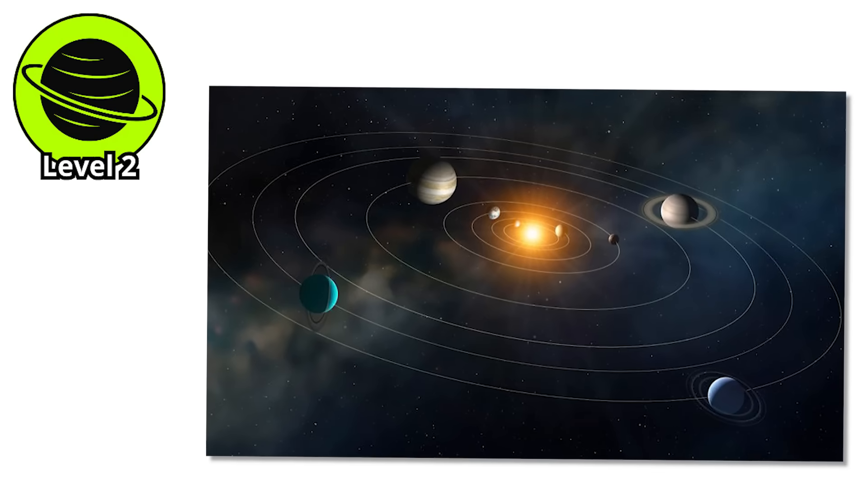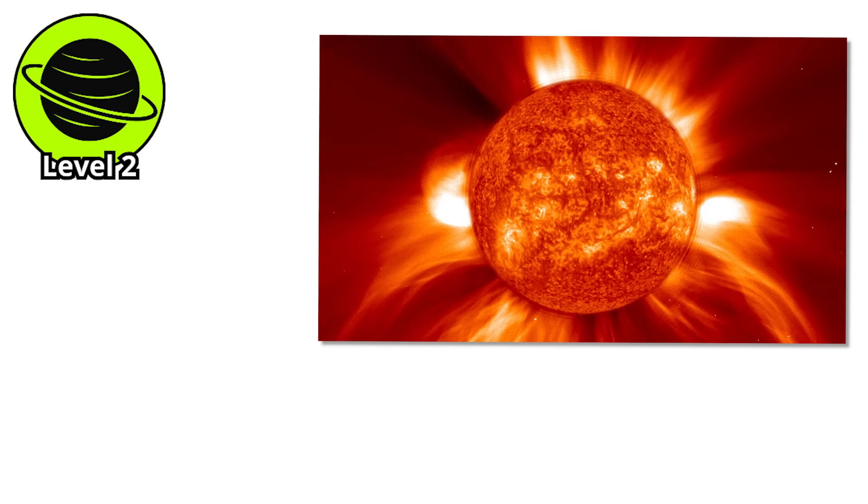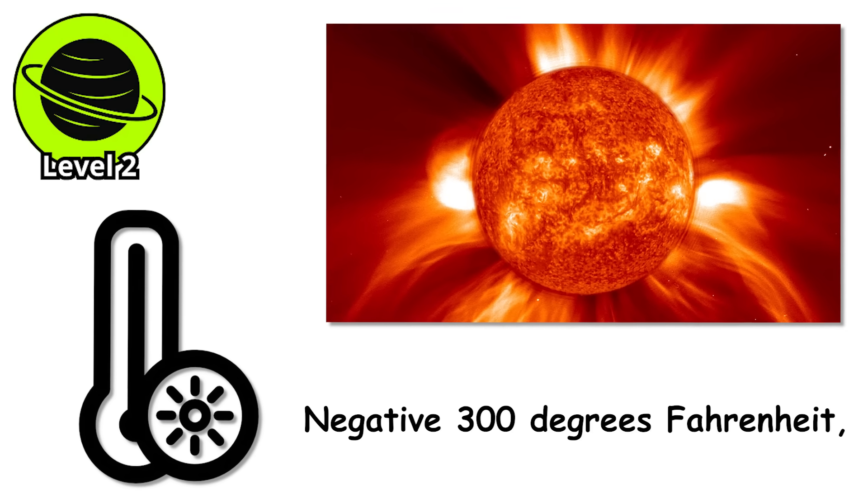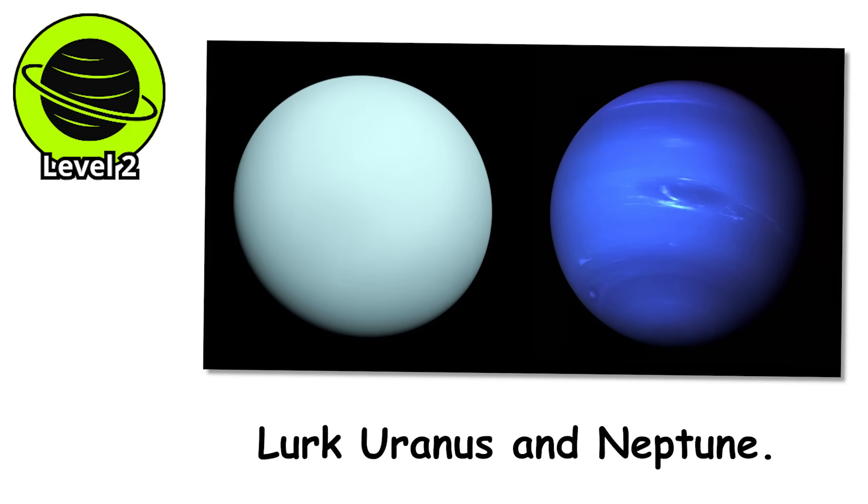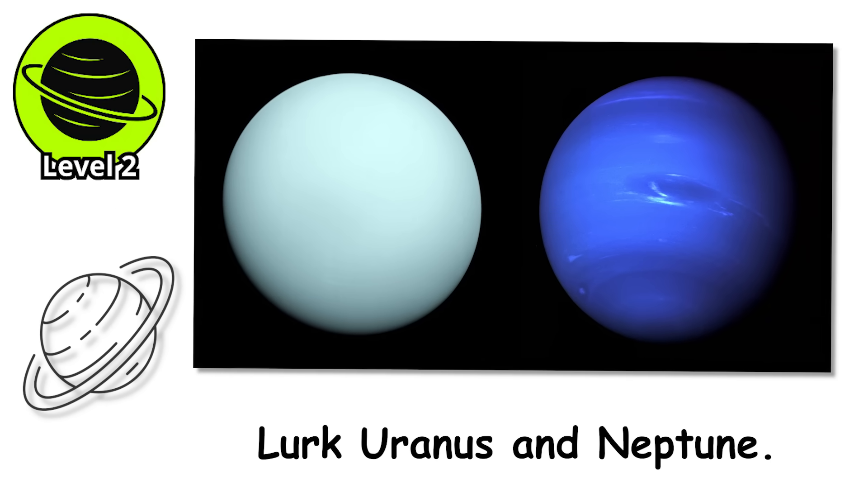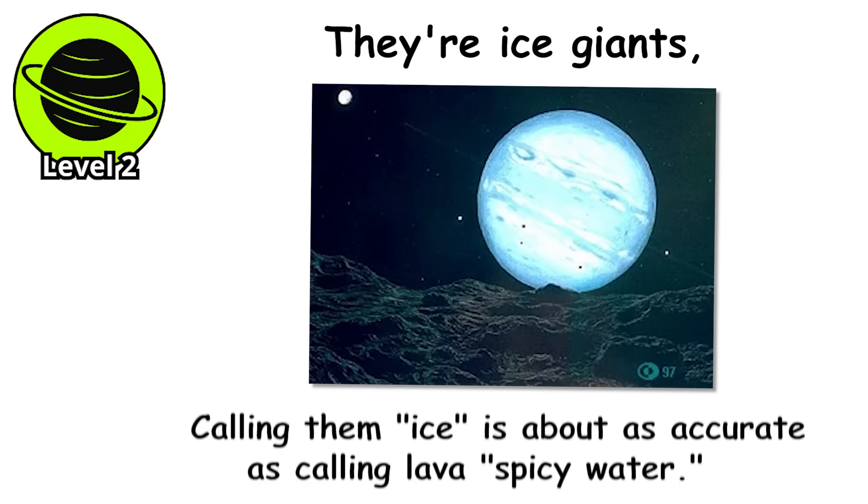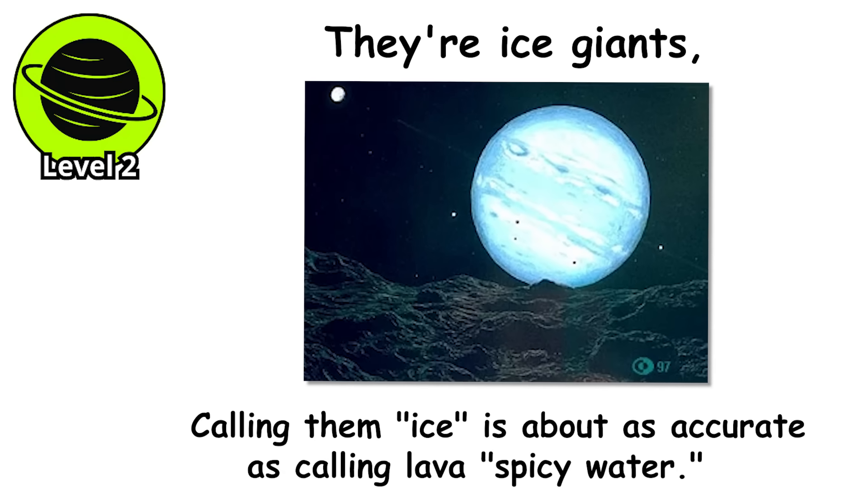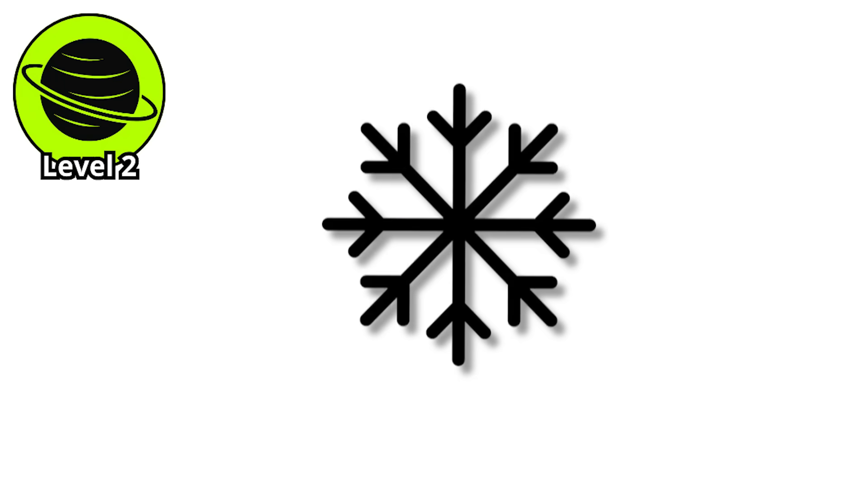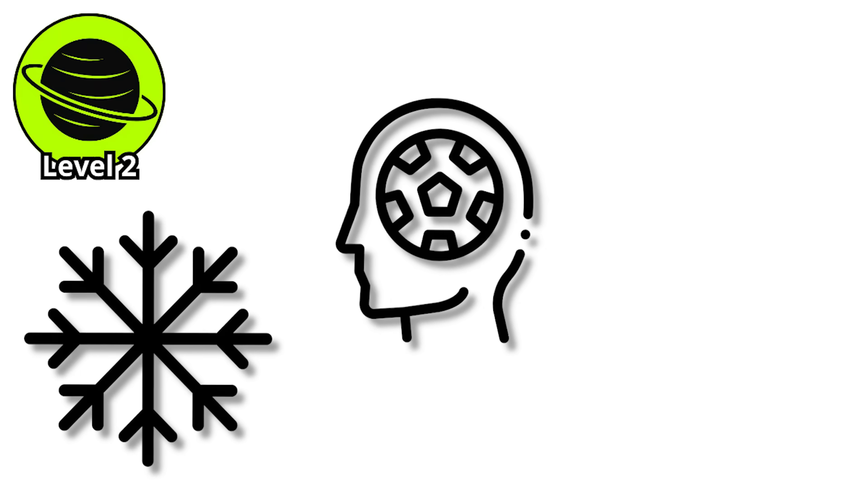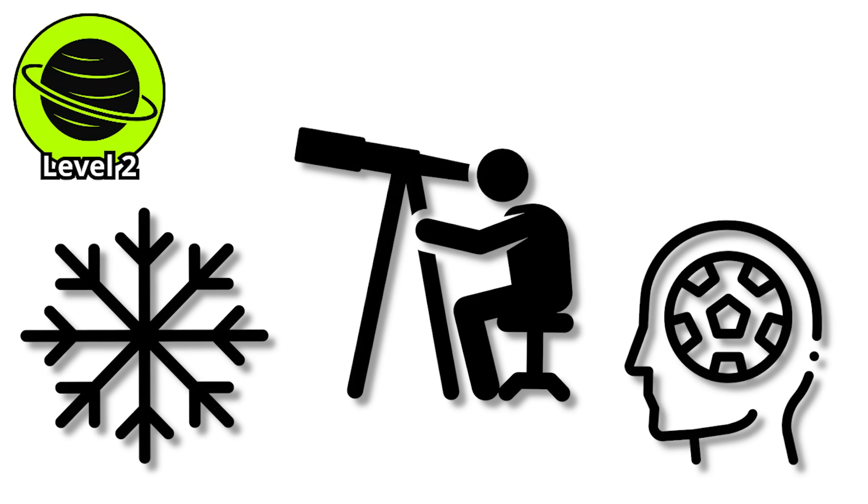Level 2. Way out in the suburbs of our solar system, where the sun looks like just another bright star and temperatures plunge to negative 300 degrees Fahrenheit, lurk Uranus and Neptune. These aren't your standard gas giants. They're ice giants, though calling them ice is about as accurate as calling lava spicy water. They're not made of ice as you know it. Instead, they're packed with what astronomers politely call ices.